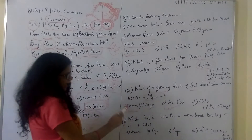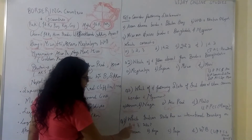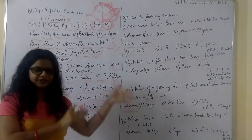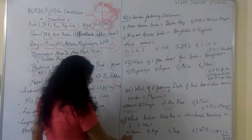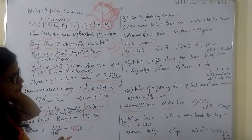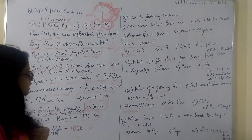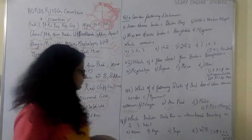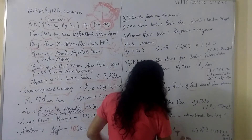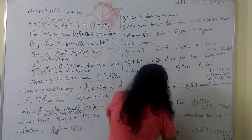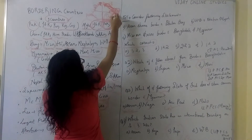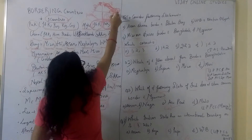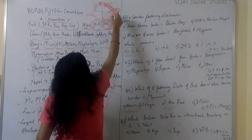Next question: Which Indian state has an international boundary on all three sides? That means it is bordered by another country on three sides. Options are Assam, Nagaland, Tripura and West Bengal. The only state bordered on three sides is Tripura. Tripura is surrounded by Bangladesh on all three sides — east, south and north.